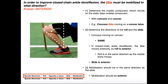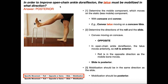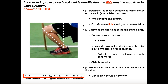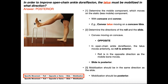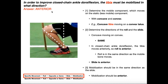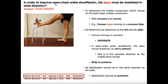These two questions illustrate some important contrasts. In open chain ankle dorsiflexion, the talus is mobile and must be mobilized posteriorly — opposite to the direction of the roll. In closed chain ankle dorsiflexion, the tibia is mobile and is mobilized anteriorly — the same direction as the roll. Changing from open chain to closed chain can significantly change how you mobilize a joint. As a bonus: for open chain plantarflexion, which is the antagonistic movement, the talus would be mobilized anteriorly — the opposite direction from open chain dorsiflexion.